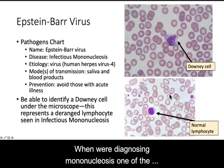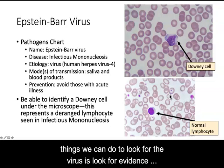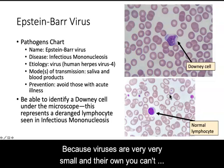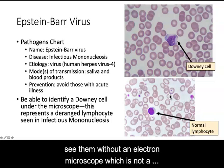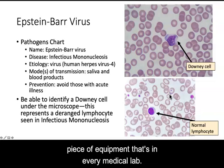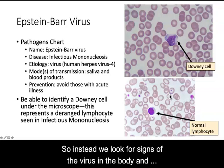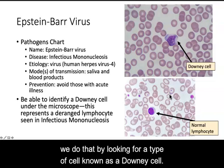When we're diagnosing mononucleosis, one of the things we can do to look for the virus is look for evidence of the damage it causes to cells. Because viruses are very, very small on their own, you can't see them without an electron microscope, which is not a piece of equipment that's in every medical lab. So instead, we look for signs of the virus in the body by looking for a type of cell known as a downy cell.